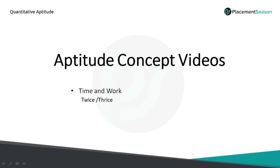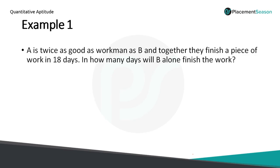Welcome to aptitude concept videos on time and work. Let's discuss a problem based on twice good workman. A is twice as good a workman as B, and together they finish a piece of work in 18 days. In how many days will B alone finish the work?